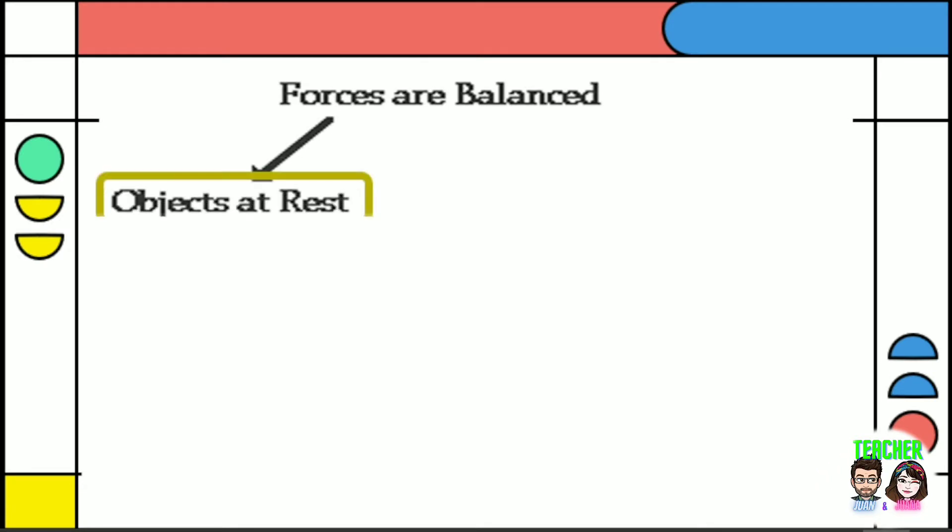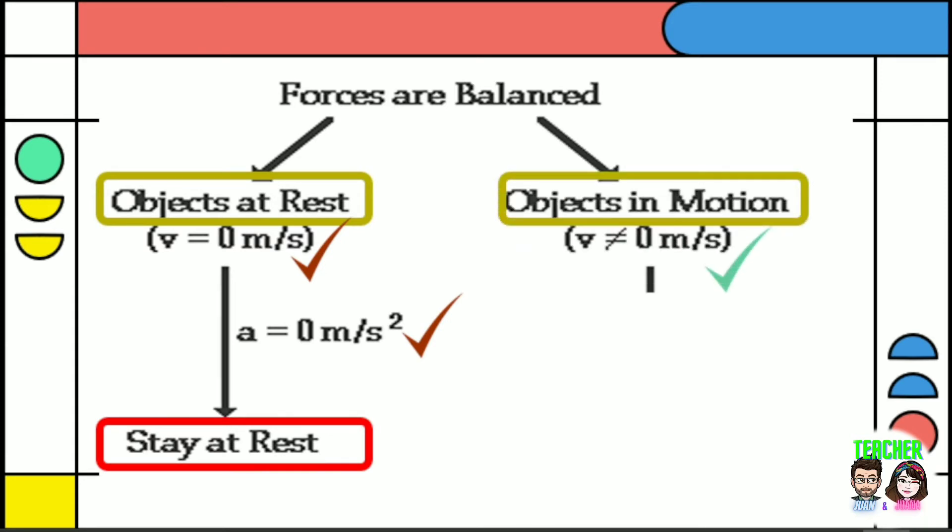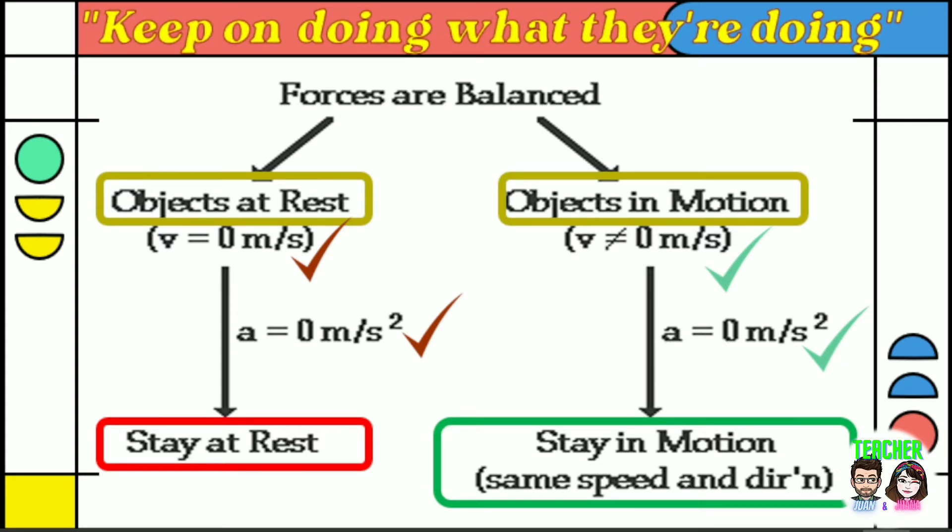When forces are balanced in stationary objects, when we say stationary it means not moving, no movement and no acceleration is involved, therefore they will remain at rest. On the other side, when forces are balanced in moving objects, moving objects has a velocity which is not equal to zero meter per second, and there is no acceleration involved, then the objects will remain moving in the same speed and direction. The behavior of all objects based on this diagram can be described by saying that objects tend to keep on doing what they're doing.